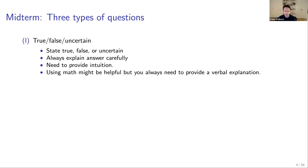True means it's strictly true and always true. False means it's strictly false and there's a counterexample. Uncertain means that without further information, you cannot actually answer the question or make a statement whether the statement is true or false.